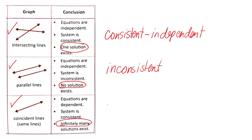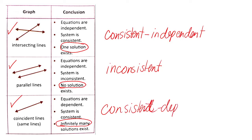And what kind of system is coinciding lines? Consistent dependent. Let us now define system: a system is simply a group of linear equations in two variables. If you consider two or more equations as one, you call that a system of equations.